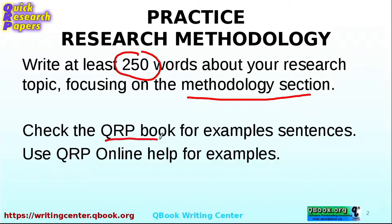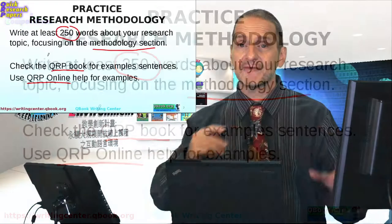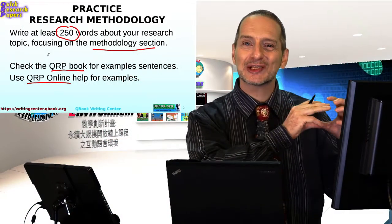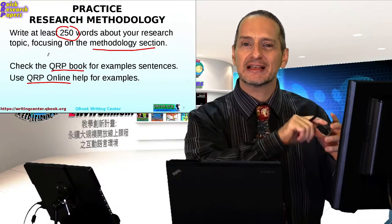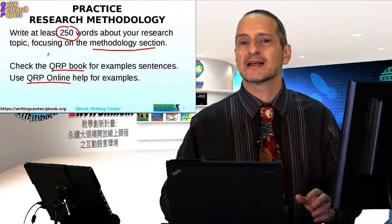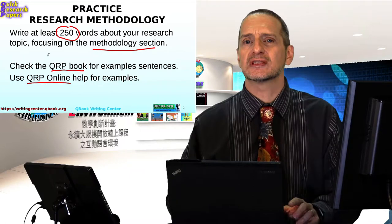Remember you can use the QRP ebook, and QRP online has that little yellow box right next to where you're writing. You can click there to see example sentences that you can use in your writing.